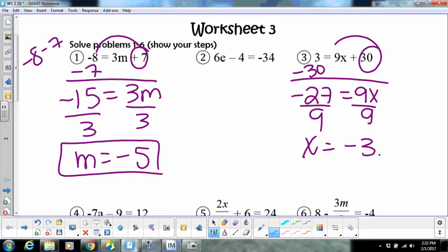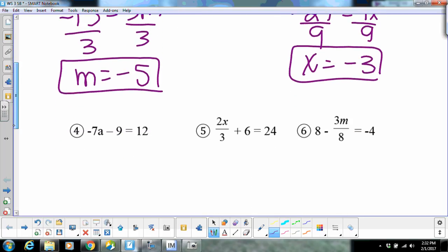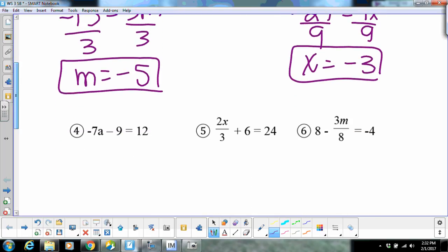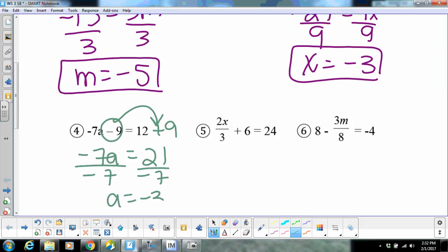Alright, for problem number four, variables already on the left, so this time I'm going to be moving the number over to the right. So that gives me negative 7a equals 21. When you divide by negative seven, a would equal negative three.